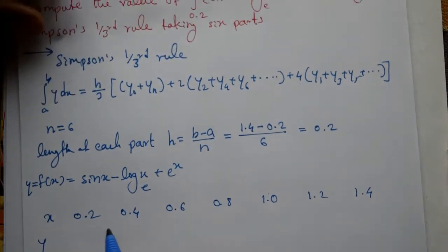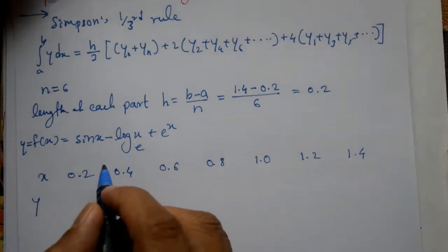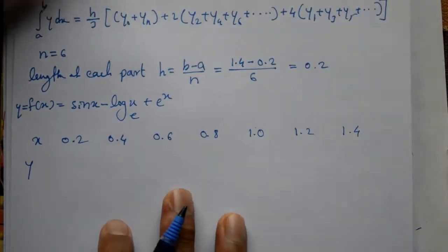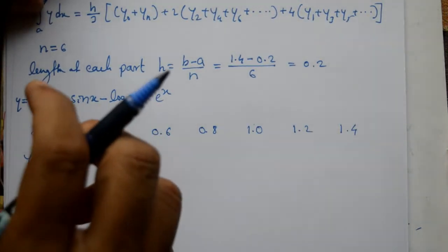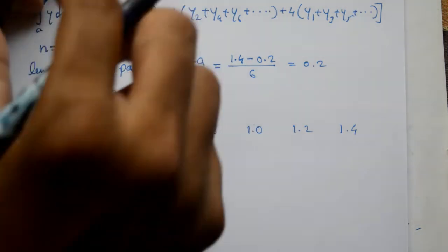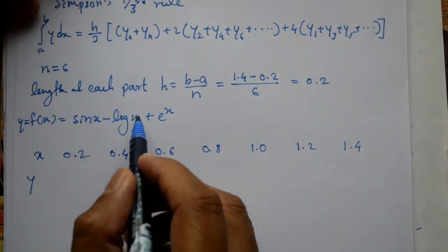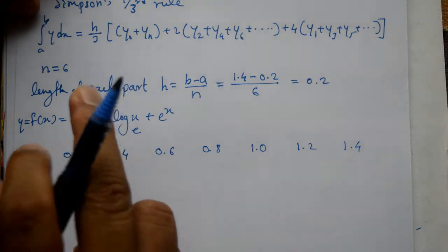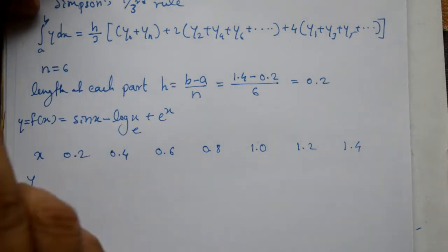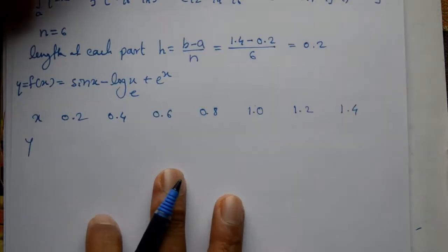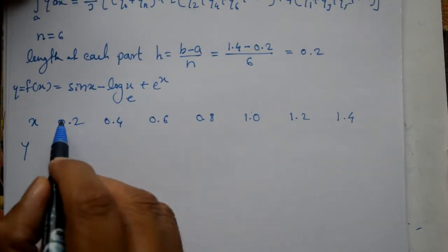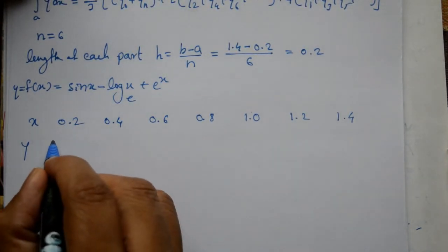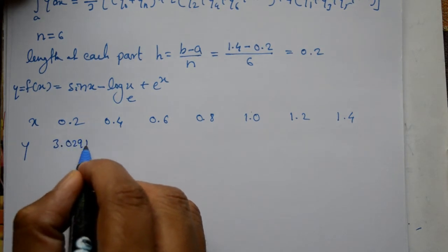Now we take y values. y means the function value. Put x equals each value. Before using calculator, use radian mode for trigonometric, logarithmic and exponential functions. Put x equals 0.2: we get 3.0295.